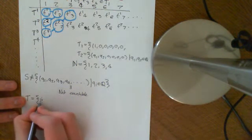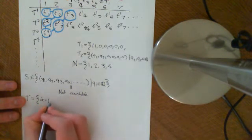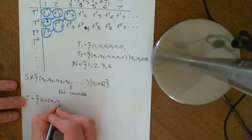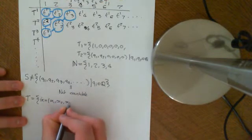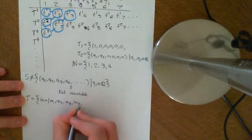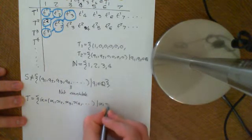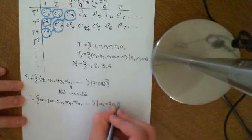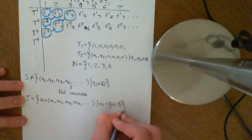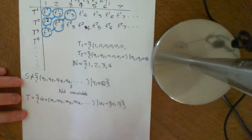So the set T, remember, was the set of sequences X, where the elements X1, X2, X3, X4, etc., were all equal to 0 or 1. So it was all sequences where the terms of the sequences were just 0s or 1s.